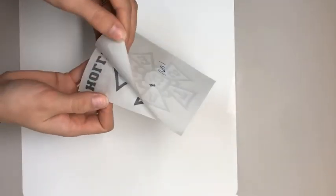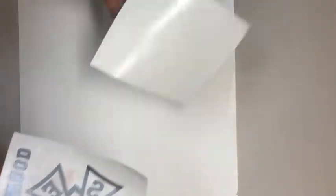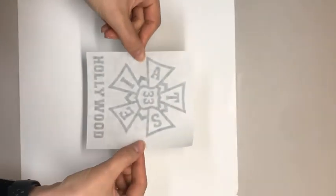So what we're going to do is we're going to just take off this liner. Just make sure that none of the decal itself pulls up with the liner. This is just kind of your waxy paper backing. Set that aside and then you're going to line up your decal to where you want it to be placed.